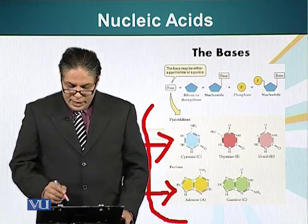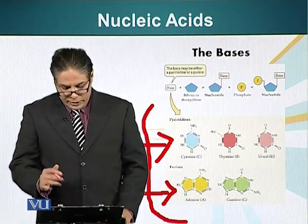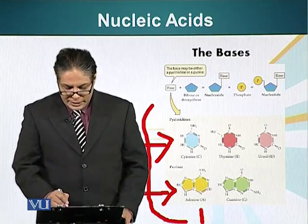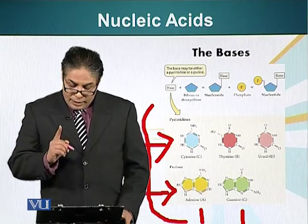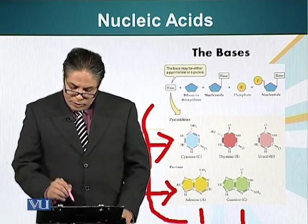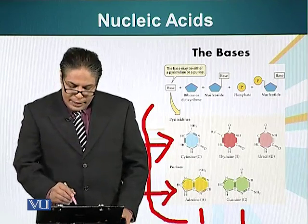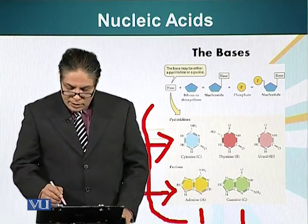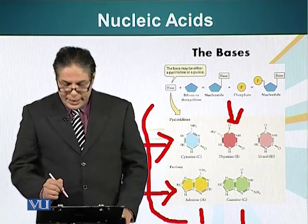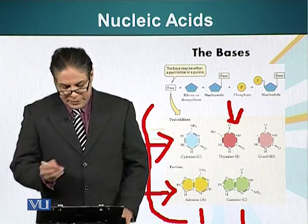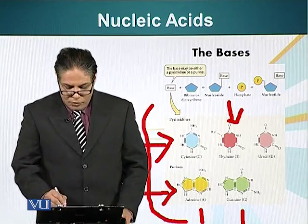Both purines — adenine and guanine — are present in both DNA and RNA. However, among the pyrimidines, thymine is not present in RNA; it is present in DNA only. In RNA, in place of thymine, we have uracil.